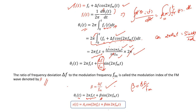Now substituting the modified θᵢ(t) into the general formula s(t) = Ac·cos(θᵢ(t)), the final equation of the single tone FM wave is: s(t) = Ac·cos(2π·fc·t + β·sin(2π·fm·t)). This is the complete time domain equation for single tone frequency modulation.